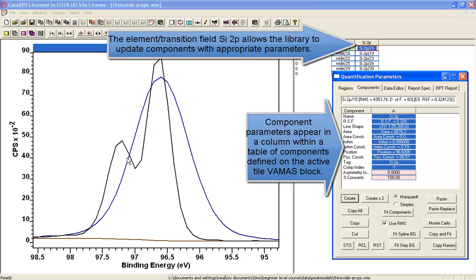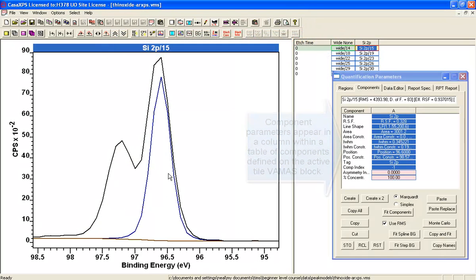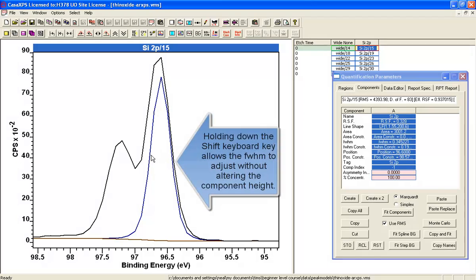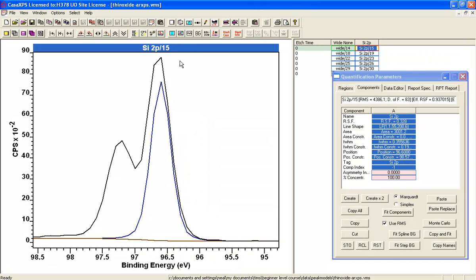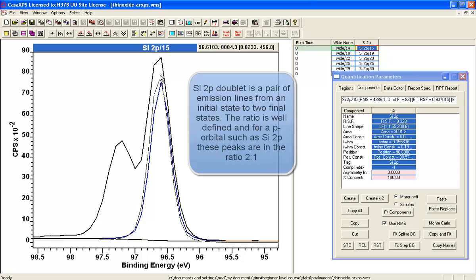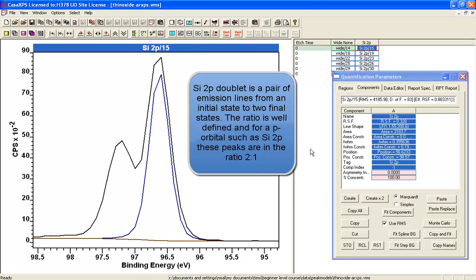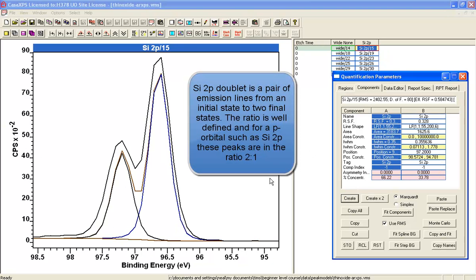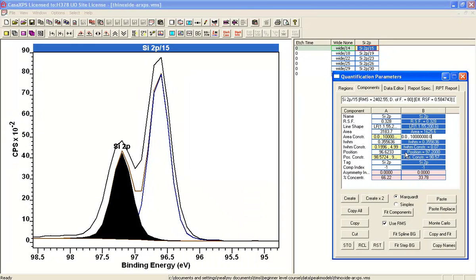So I hold the shift key down and that allows me to adjust the width of a peak without making the area adjust. So if I don't have the shift key down, you'll see that the height adjusts to maintain the area because there are known relationships between peak areas. This is an example of one where if I create a second one, the area of this peak here is related to the first peak.